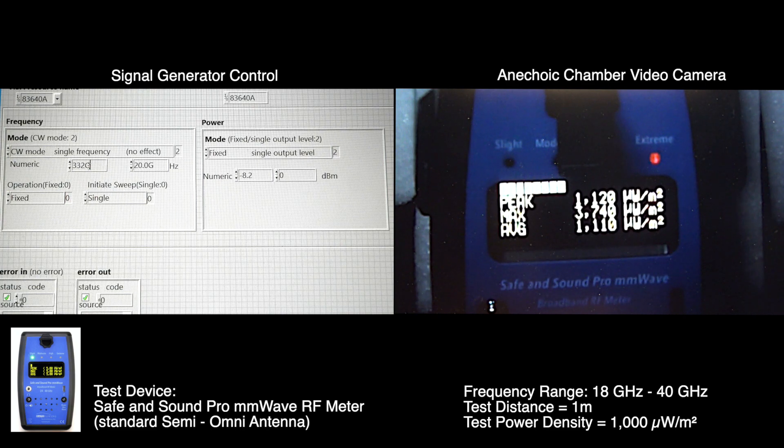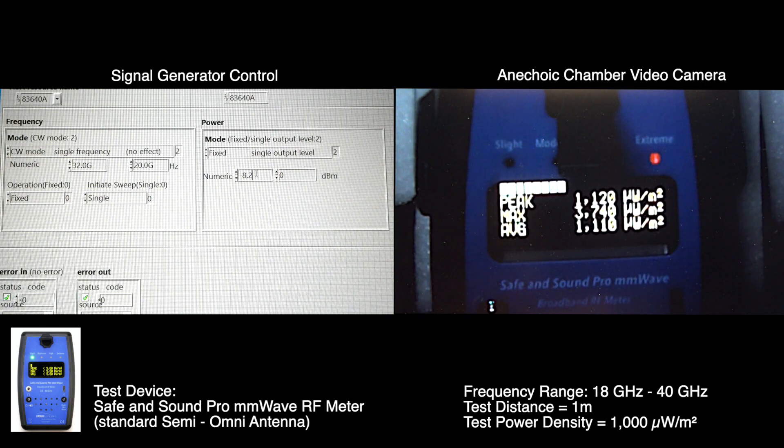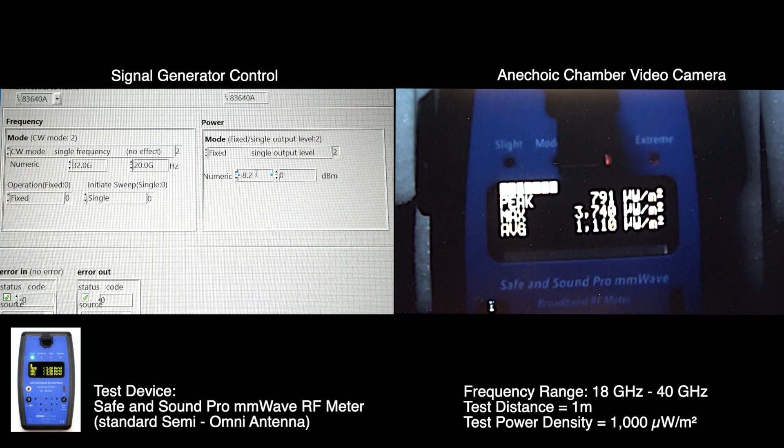32 gigahertz, not 332, there we go 32 gigahertz and that will be the same transmitter power to generate our expected field density and we are down to 791 microwatts per square meter.